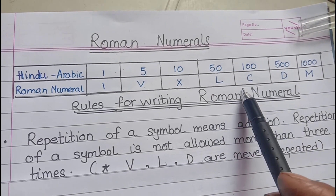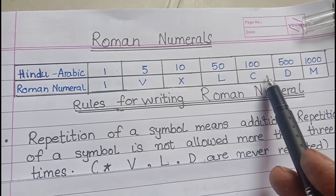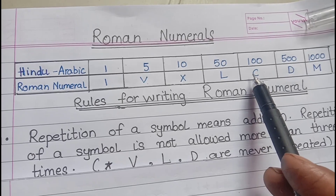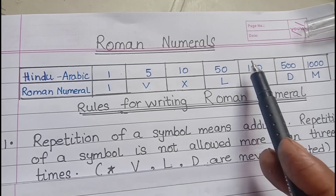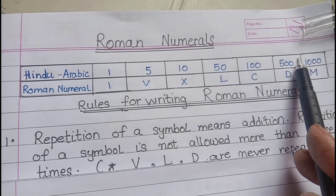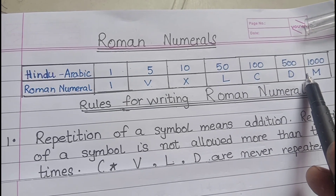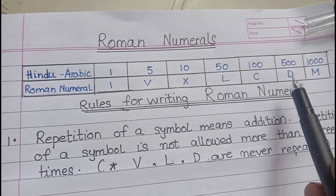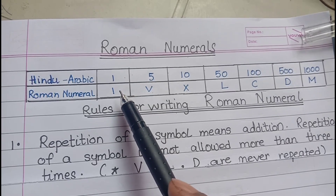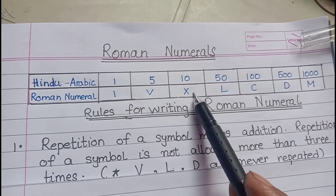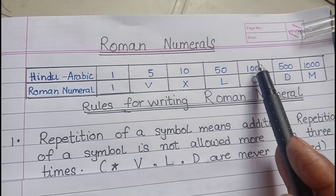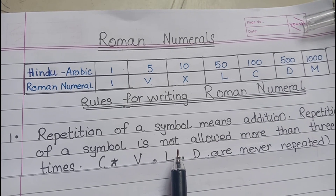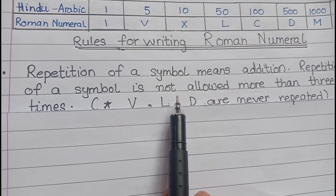I use the word LCD — like LCD TV — to remember the next symbols. L is 50, C is 100, and D is 500. C is for century — Sachin's century, 100 runs. And M is for millennium, M is 1000. So: I=1, V=5, X=10, L=50, C=100, D=500, M=1000.